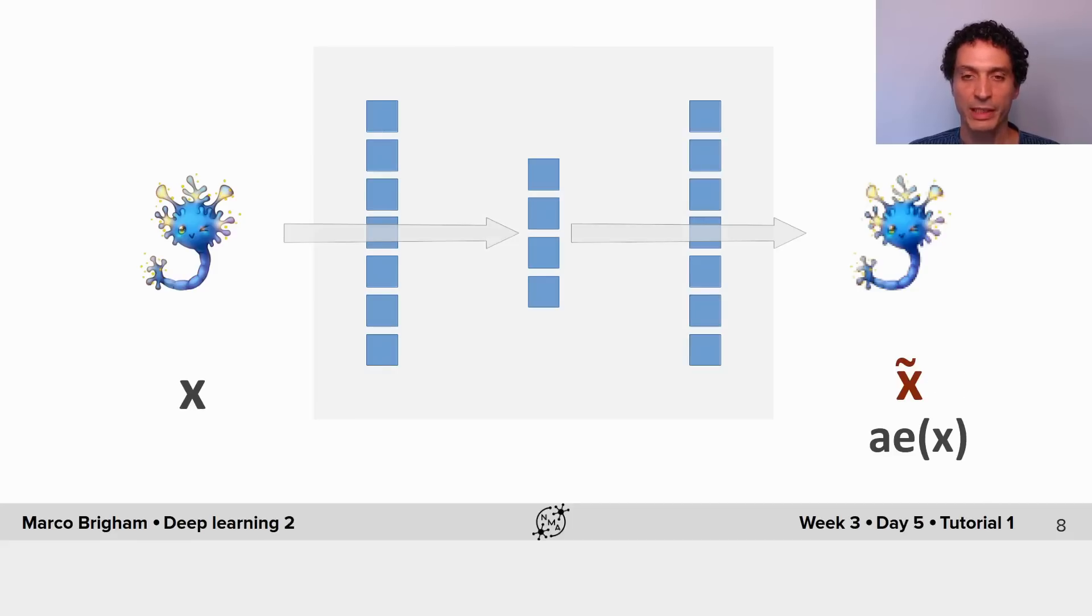So this is the basic architecture of the autoencoder that we will see in this tutorial that has one hidden layer, also called a shallow autoencoder.